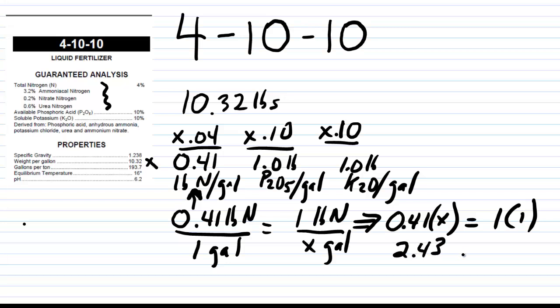And remember, our units here are gallons, 2.43 gallons, and 2.43 gallons contains 1 pound of nitrogen. And that makes sense, because there was 0.41 pounds in 1 gallon, so we know we needed more than 2 gallons in order to get something getting close to a pound of nitrogen.